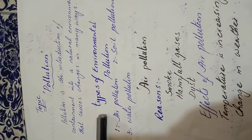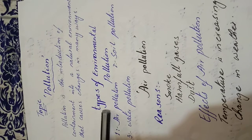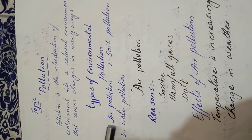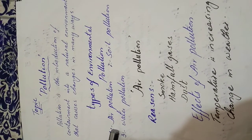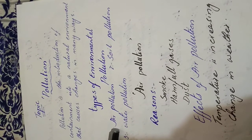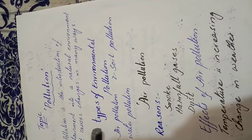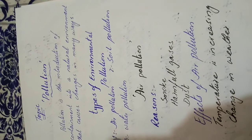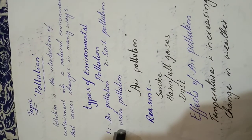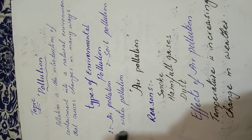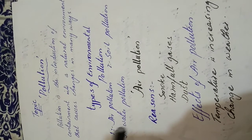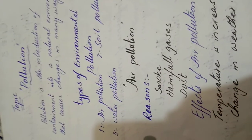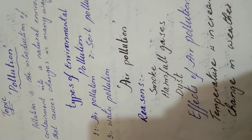After that, we will discuss the types of environmental pollution. These are: first, air pollution; second, soil pollution; and the third one is water pollution. Our first topic is air pollution.